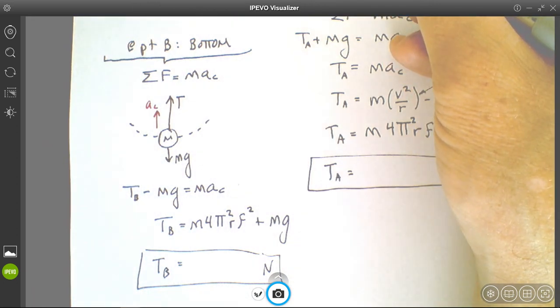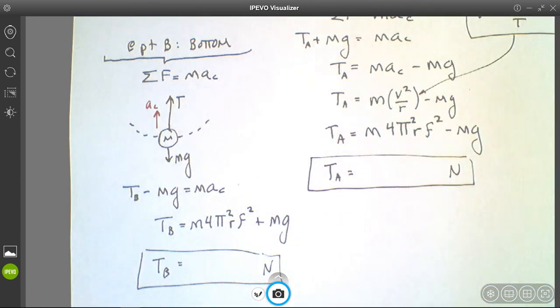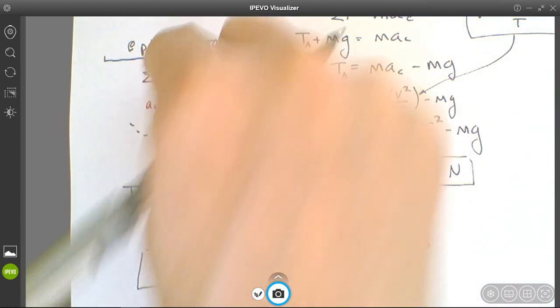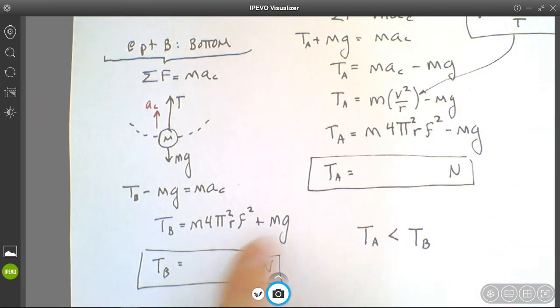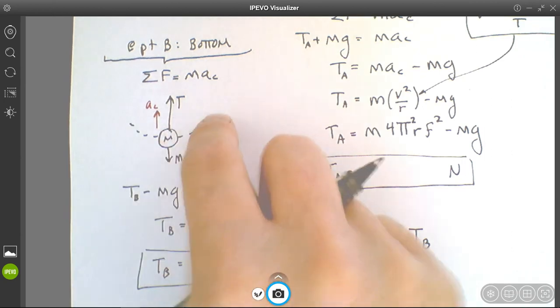However, in this case we're subtracting off gravity because gravity is helping it navigate the circle, right? At the top, gravity is helping it keep that circular shape, so therefore the tension at A must be less than the tension at B. It has to, because in this situation the tension has to be greater in order to compensate for the gravity that's pulling down, in order for it to navigate that circle properly.